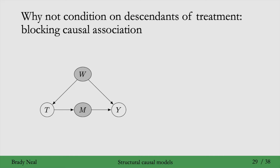So there are a few reasons why we don't want to condition on descendants of treatment. The first, we don't need structural causal models for — we can just look at the graph. We want to measure the effect of treatment on outcome, t on y. And in this graph, if we condition on m, we're going to block all of the causal association from t to y. We're going to mistakenly measure a causal effect of 0 because we've blocked all of the causal association by conditioning on m.